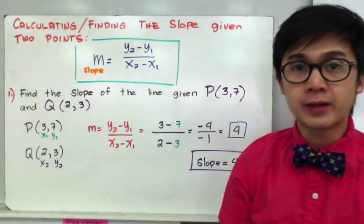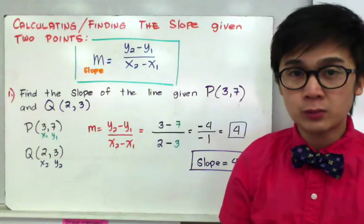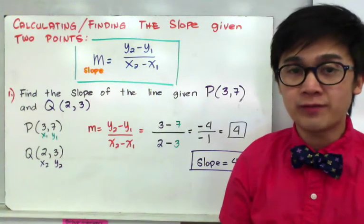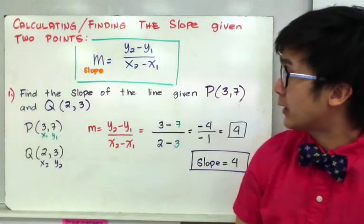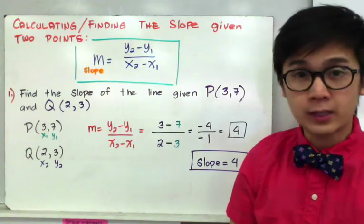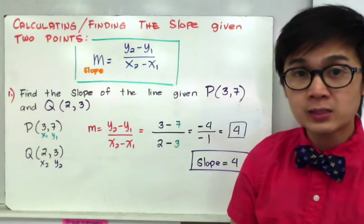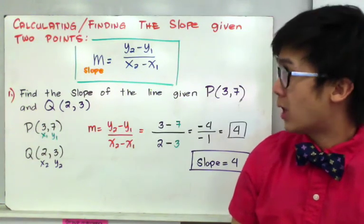Today we're going to learn how to find the slope of a line given two points. The formula we will use is m equals y sub 2 minus y sub 1 all over x sub 2 minus x sub 1. The y ordered pair will always be on top and your x coordinate will be at the bottom of your denominator.